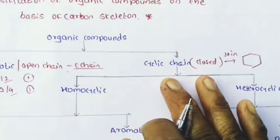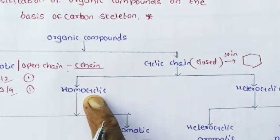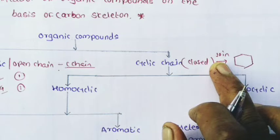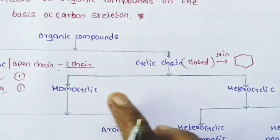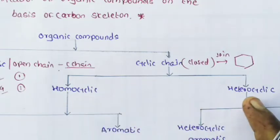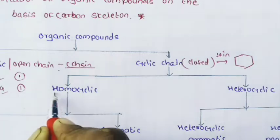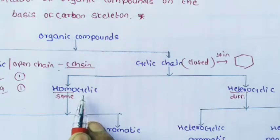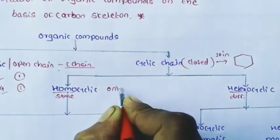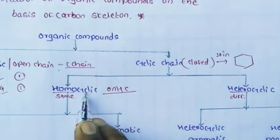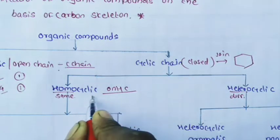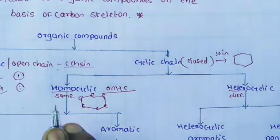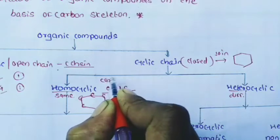This cyclic or closed chain compound is further classified into homocyclic and heterocyclic compounds. Here, 'homo' means same and 'hetero' means different. A homocyclic compound is made up of only carbon atoms — the ring contains only carbon atoms — and is also called a carbocyclic compound.